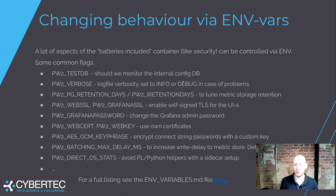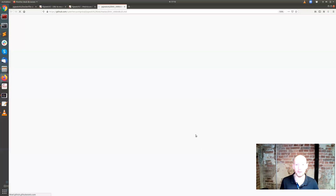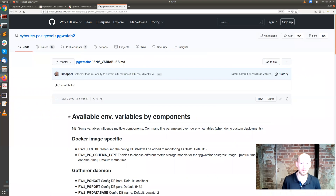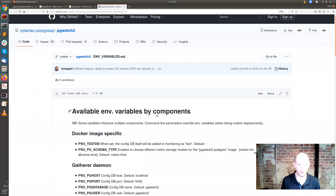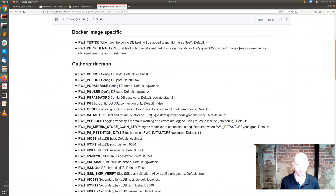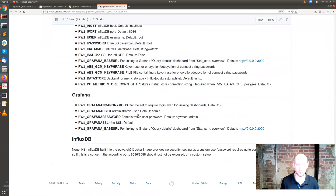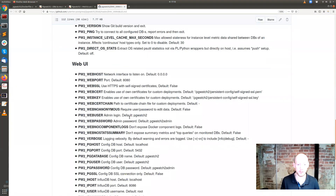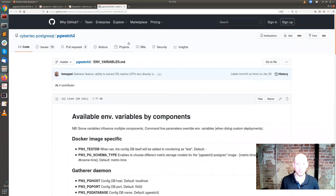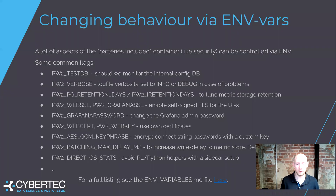Talking about further configuration, there are a lot of options. If you look at the full list of environment variables you can feed into Docker, there are about 40 to 50 items. The most common ones are listed here.